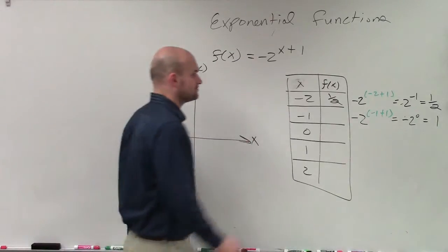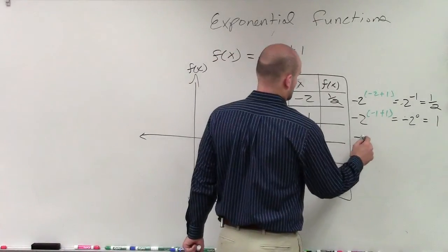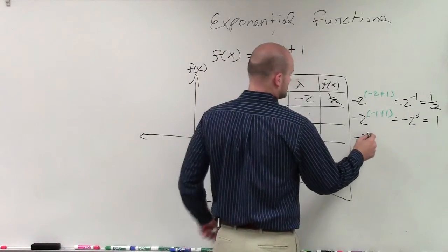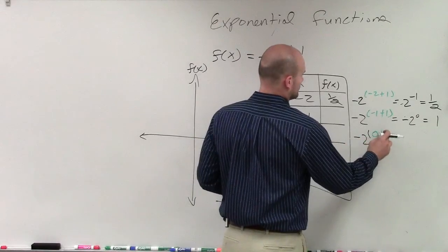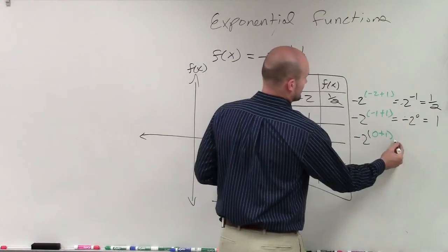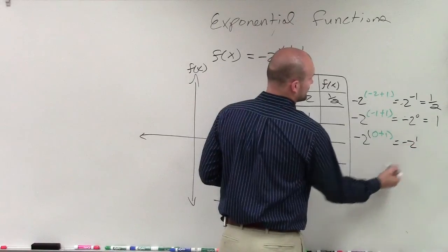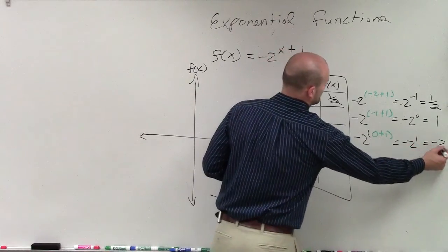So now we do 0. Negative 2 to the 0 plus 1 equals negative 2 to the first power, which is just equal to negative 2.